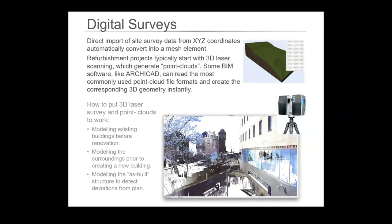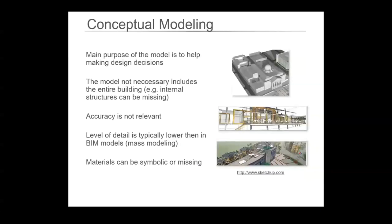We can take 3D surveys, digital surveys, laser surveys and put them into our model and use them as a starting point from which to build our buildings. We can also use those as a tool during the building process to make sure that what is being built is what we've designed and everything's in the right place. And then also after the fact as an as-built, so we can see that it has been built to plan and that there are no discrepancies. This all comes back to why it's essential to model correctly and accurately right from the start.